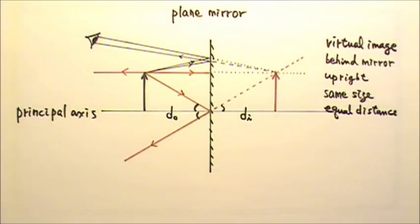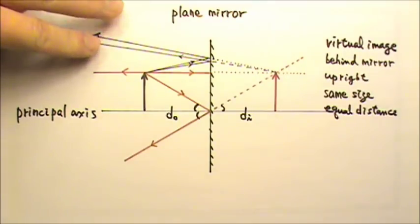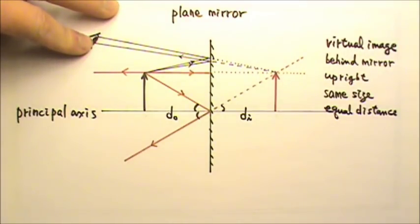But because our pupil has size, we can see depth even with one eye. With two eyes, we would be able to receive light rays from wider angles. Therefore, we can see depth better with two eyes.